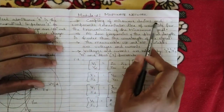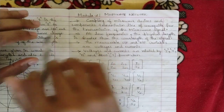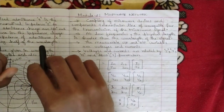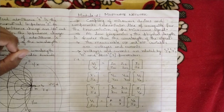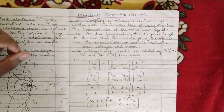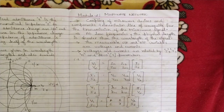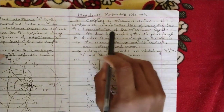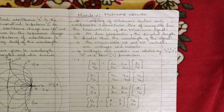Starting with microwave network: the coupling of microwave devices and components of transmission line or waveguide for the transmission of the microwave signal. To build a microwave network we need coupling of microwave devices. Whatever microwave devices we discussed in the first video — when their characteristics match each other, they can be categorized as coupled. The network is basically the coupling of one or more microwave devices to form a microwave network.